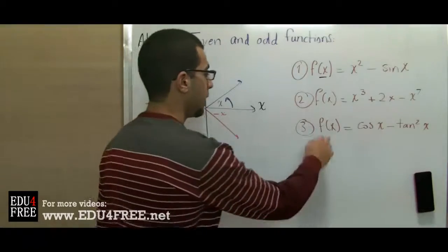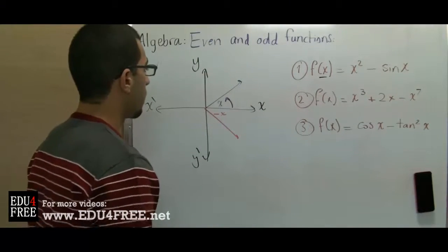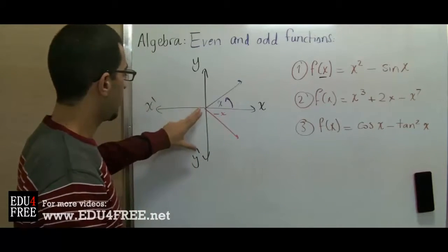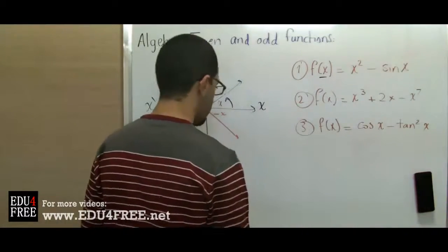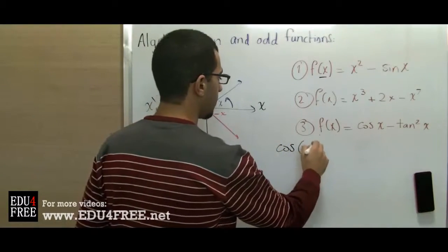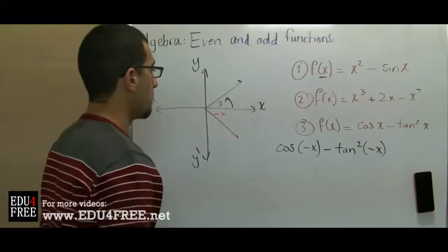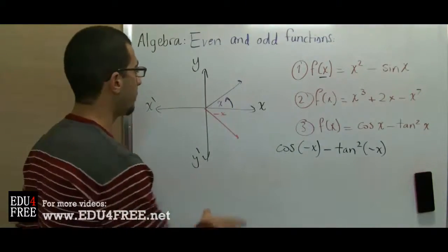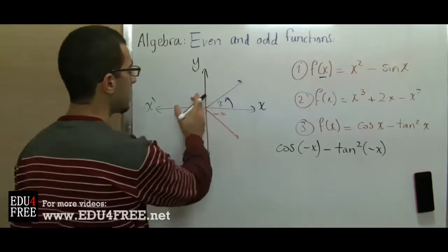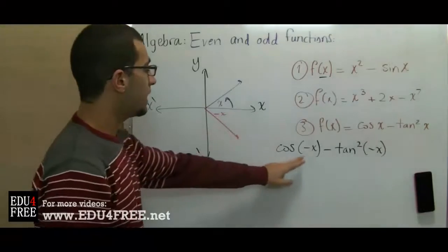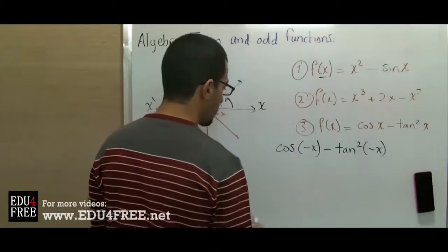Example number 3: f(x) = cos(x) - tan³(x). We plug in negative x to get cos(-x) - tan³(-x). Since cosine corresponds to the x-axis value, cos(-x) equals cos(x) — it doesn't change because we are still on the positive side of the x-axis.